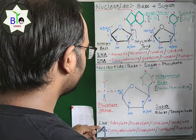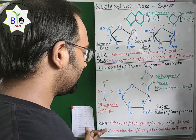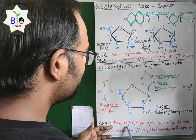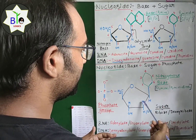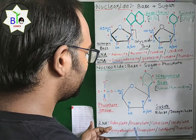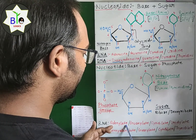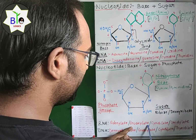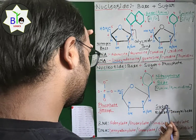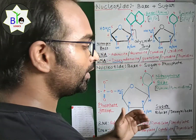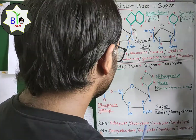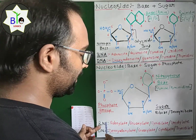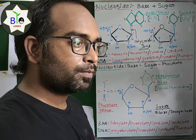For nucleotides in RNA: if adenine is present as the nitrogenous base it is called adenylate; if guanine is present it is guanylate; if cytosine is present it is cytidylate; and if uracil is present it is uridylate.